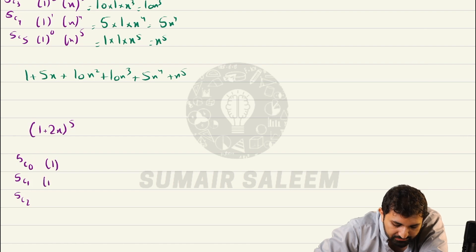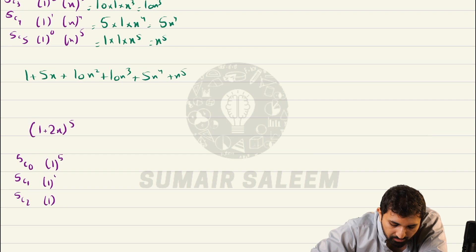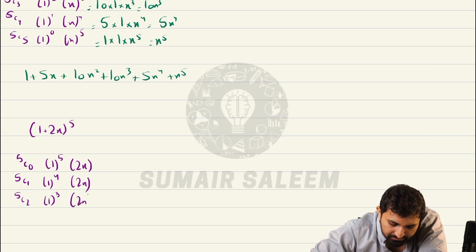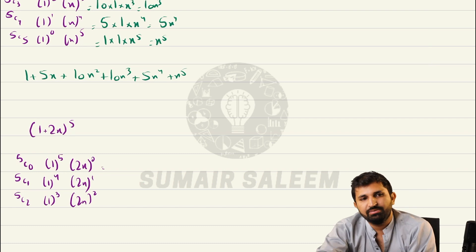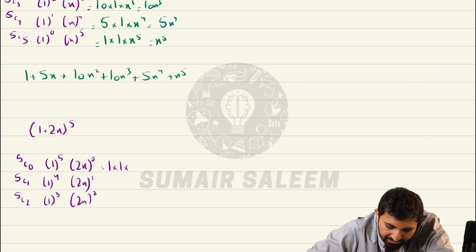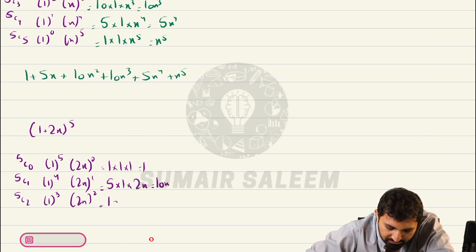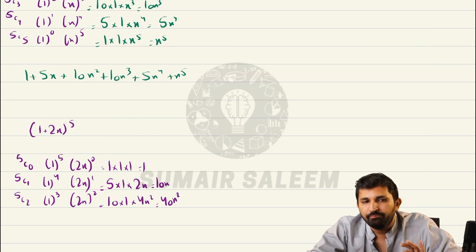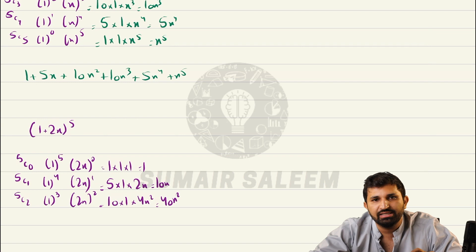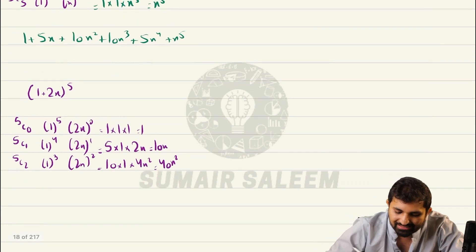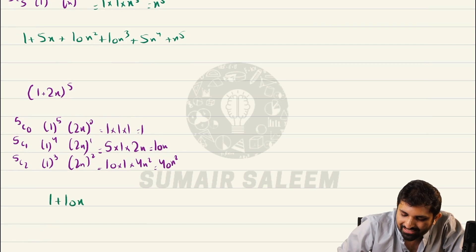For the first term: 1, 1, 1 with backward counting 5, 4, 3. Forward counting for the second term 2x: powers 0, 1, 2. 5C0 is 1, into 1, into 1, that makes 1. 5C1 is 5, into 1, into 2x, that makes 10x. 5C2 is 10, into 1, into 4x squared, that makes 40x squared. When you are not doing full expansion and only expanding the first three terms, you always write the answer as: 1 plus 10x plus 40x squared plus dot dot dot. The dot dot dot represents that you are not expanding fully.